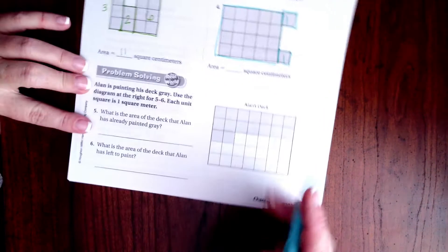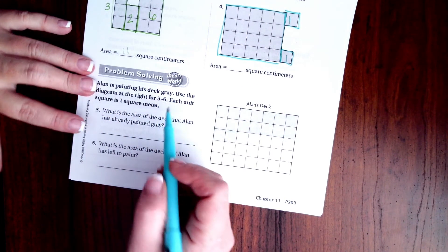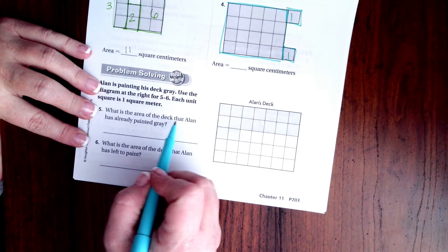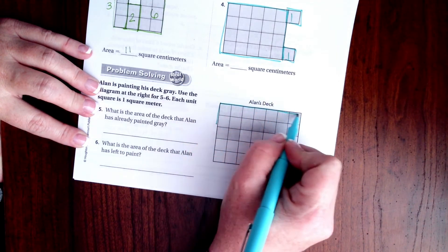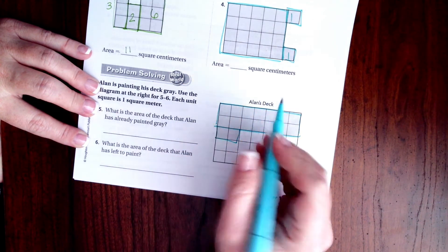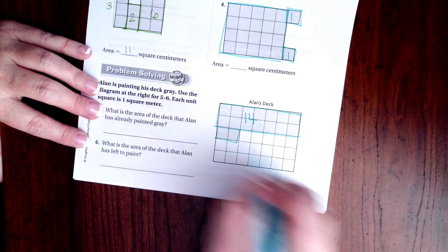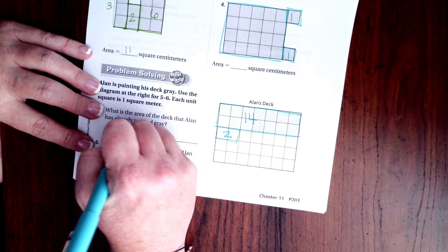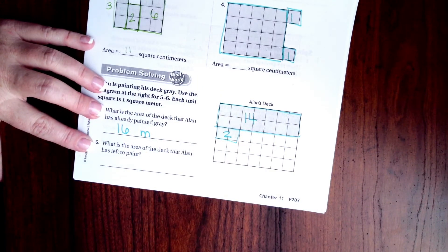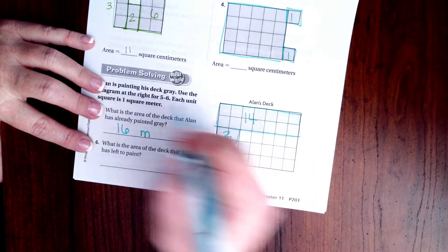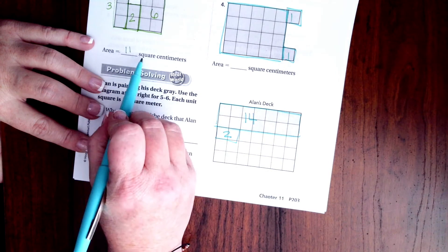We are going to go down and do this one. Alan is painting his deck gray. Use the diagram at the right for 5 and 6. Each unit is 1 square meter. What is the area of the deck that Alan has already painted gray? Well, so we have 2 times 1, 2, 3, 4, 5, 6, 7. So that's 14, because 2 times 7 is 14. And then I'm going to add 2 more, so that's 16 meters. And when we are multiplying to get area, we're multiplying meters by meters, so it is meters squared, or square meters, the way that it's written up here.